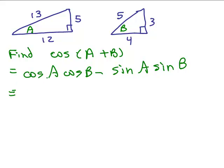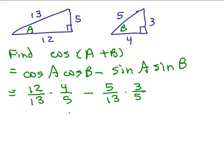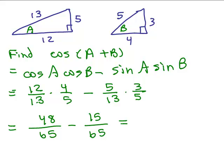Looking at the picture: cosine of a is 12/13, and cosine of b is 4/5, minus sine of a which is 5/13, times sine of b which is 3/5. Doing the multiplication first: 12 times 4 is 48 over 13 times 5 which is 65, minus 5 times 3 is 15 over 65. We have a common denominator, so we subtract and get 33/65.